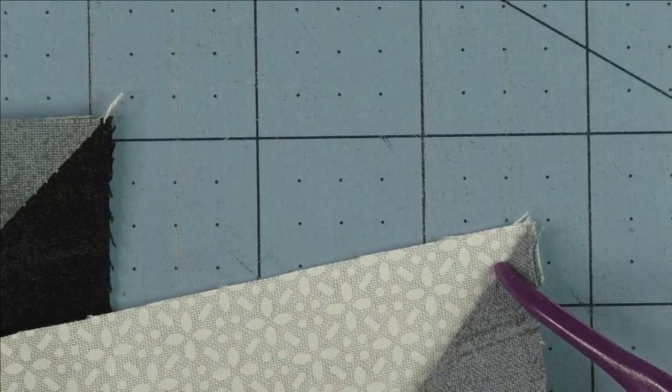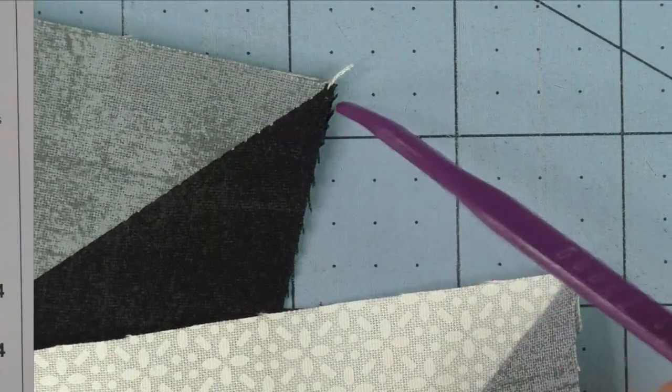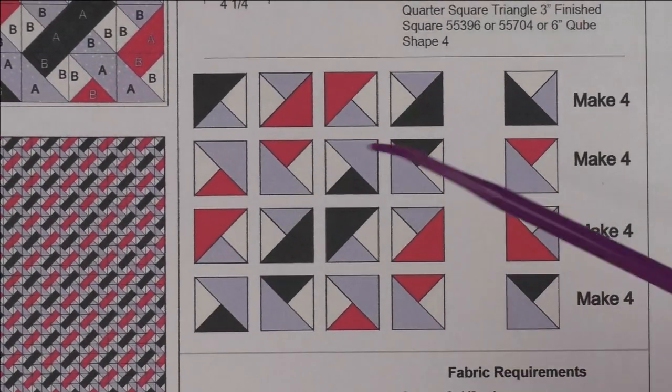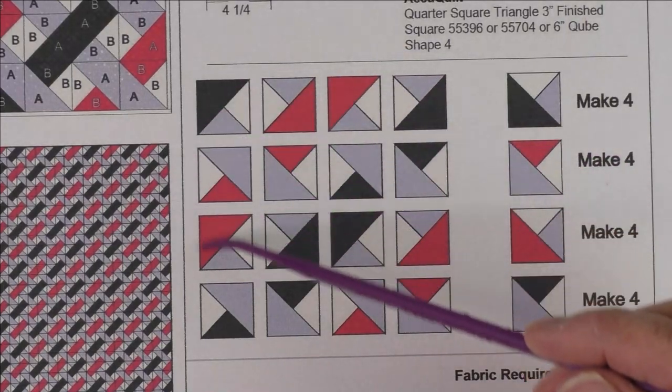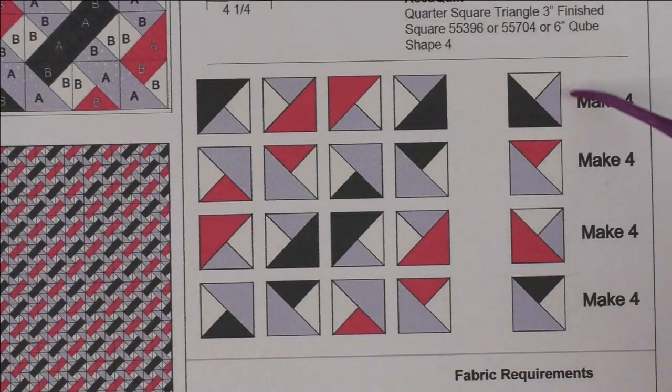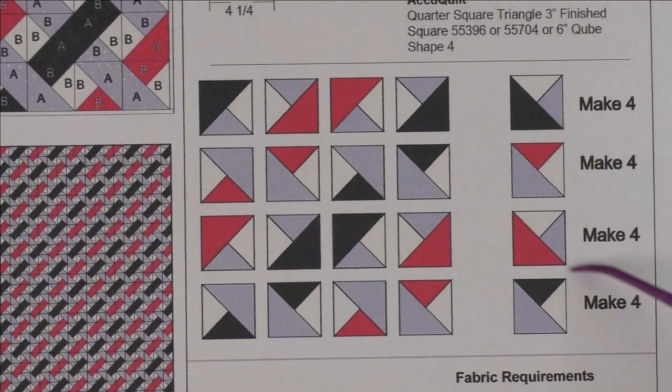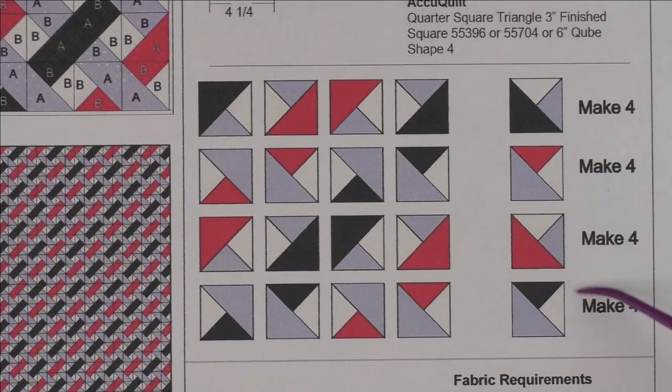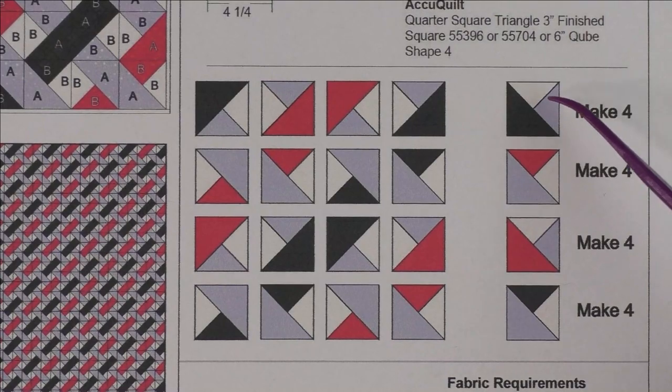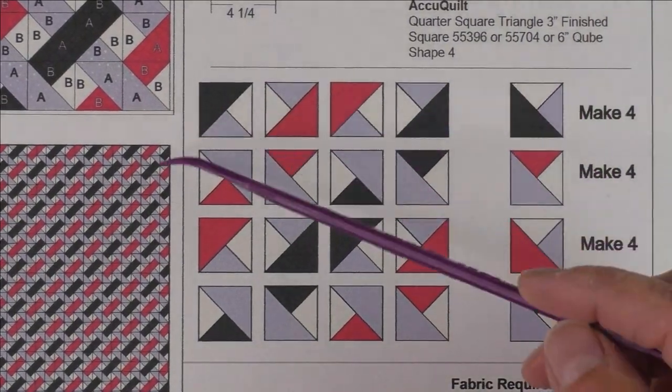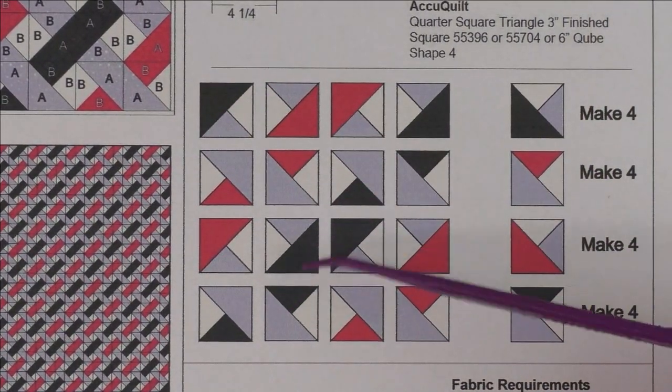This is an exploded view of the block. Over here are the different units you make. There are four different units and you make four of each, so it's probably easier if you just piece these and then follow the diagram and put them together in the block.